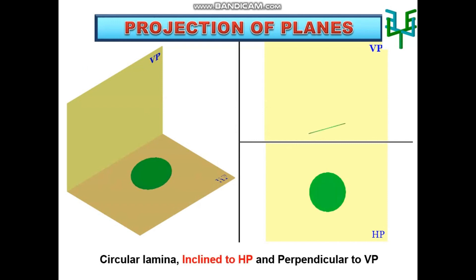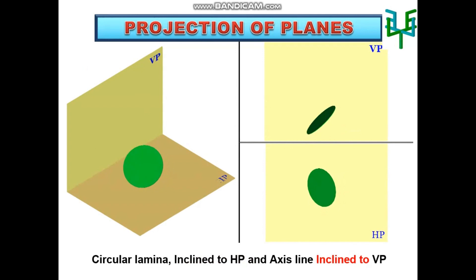Then the plane is tilted to make it inclined to HP. Then the diametrical line of the circle is tilted to make it inclined to VP. The projections of this case can be drawn in three stages.